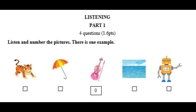1. R, r, robot. 2. U, umbrella. 3. T, t, tiger. 4. S, s, see.